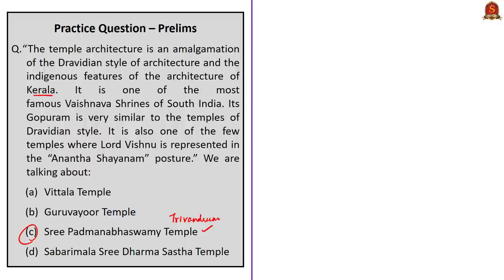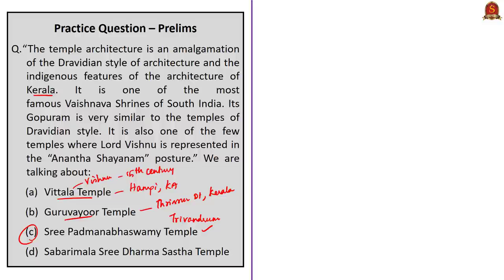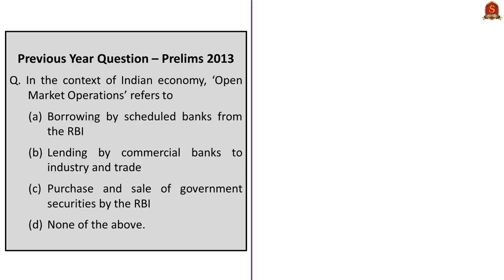In this context, know that the Vittala Temple is located at Hampi in the state of Karnataka — Vittala is another name for Lord Vishnu, and this temple was originally built in the 15th century AD. The Guruvayur Temple is located at Thrissur in the state of Kerala, dedicated to Lord Guruvayurappan where Lord Vishnu is worshipped as Krishna. The Sabarimala Sri Dharmasastha Temple is dedicated to Lord Ayyappa and is located inside the Periyar Tiger Reserve in the state of Kerala.